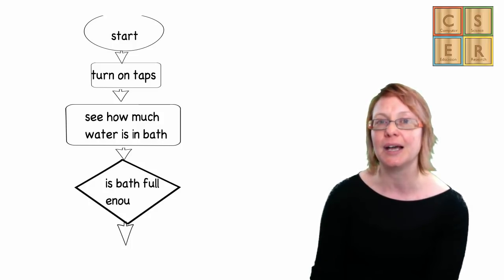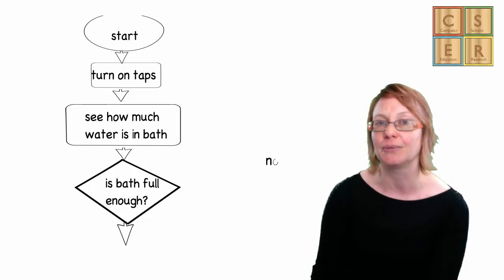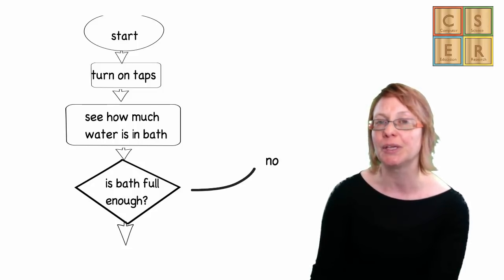We can embody this in our algorithm by including a Boolean expression to check whether the bath is full enough. If the answer is false, we keep running the water. If the answer is true, we stop.